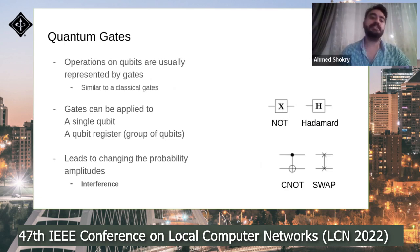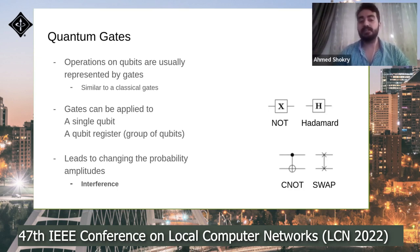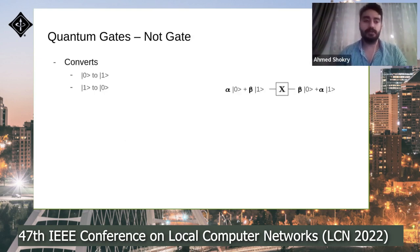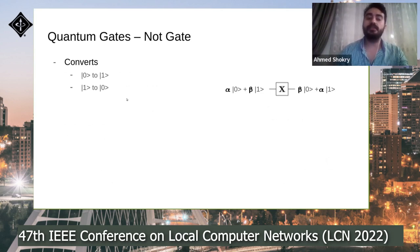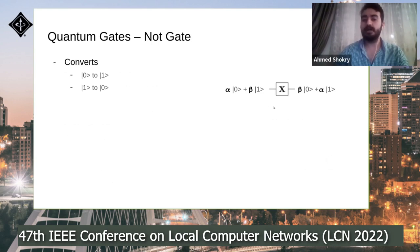Quantum gates are like classical gates — operations on qubits usually represented by gates. Gates can apply to a single qubit or a quantum register, leading to changes in probability amplitudes, referred to as interference. The NOT gate converts |0⟩ to |1⟩ and |1⟩ to |0⟩, and can also work on superposition state α|0⟩ + β|1⟩, converting it to β|0⟩ + α|1⟩.